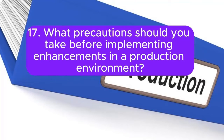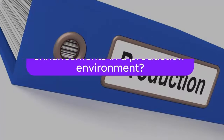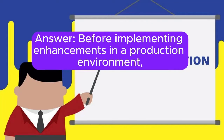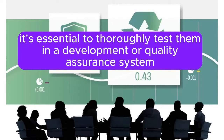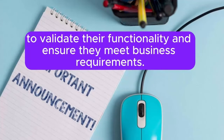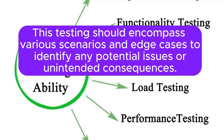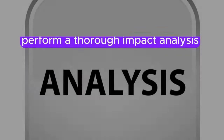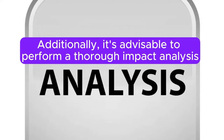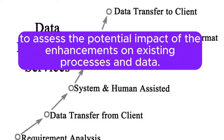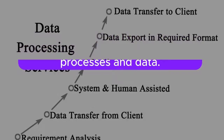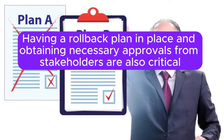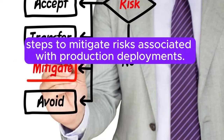What precautions should you take before implementing enhancements in a production environment? Before implementing enhancements in production, it's essential to thoroughly test them in a development or quality assurance system to validate functionality and ensure they meet business requirements. Testing should encompass various scenarios and edge cases. Additionally, perform a thorough impact analysis on existing processes and data, have a rollback plan in place, and obtain necessary approvals from stakeholders.